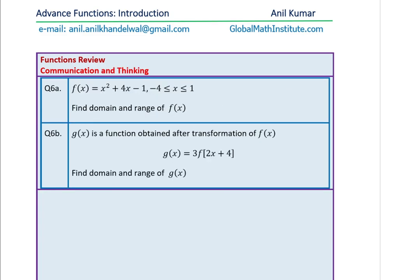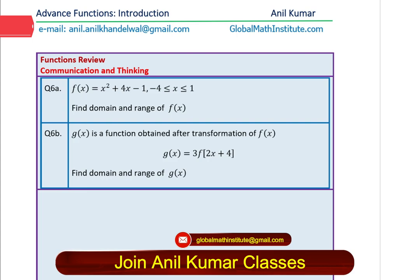Question number six. F of x is equal to x square plus 4x minus 1 where x is greater than or equal to minus 4 and less than or equal to 1. Find domain and range of f of x. Question 6b, G of x is a function obtained after transformation of f of x. G of x equals 3 times f of 2x plus 4. Find domain and range of this transform function g of x.